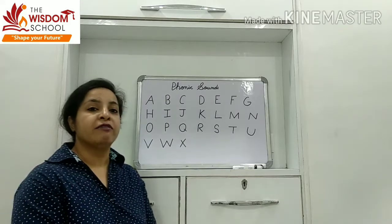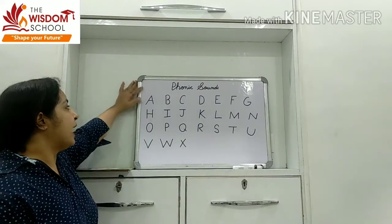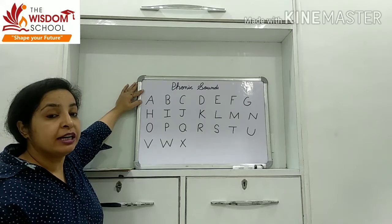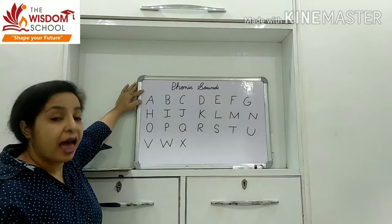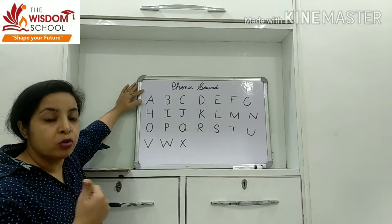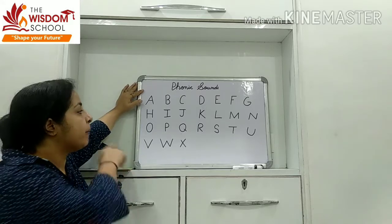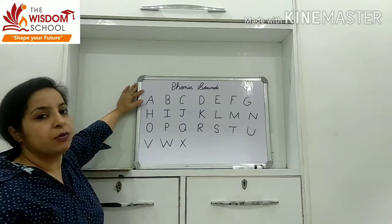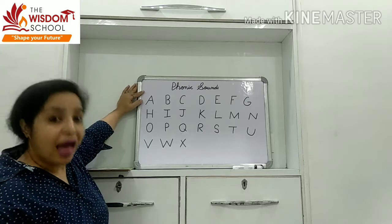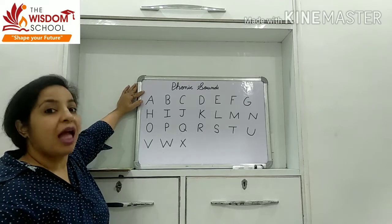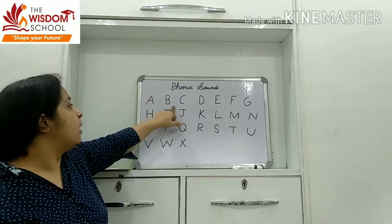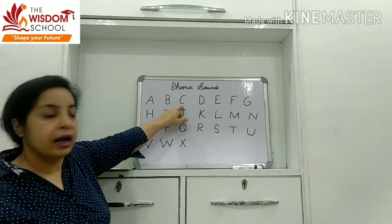Now, look at the whiteboard. As you all know, this is the letter A. The phonic sound of letter A is 'a'. You all know that the phonic sound of letter A is 'a'. B — 'b', 'b'. C — 'c', 'c'.